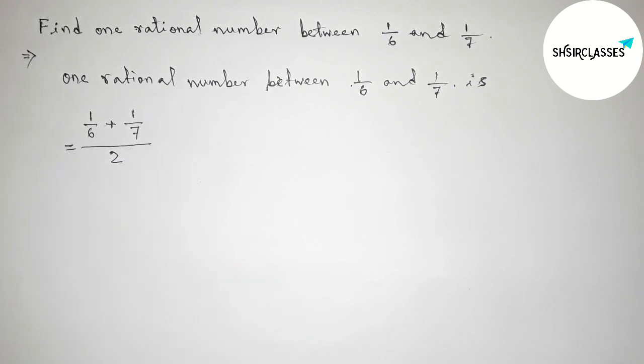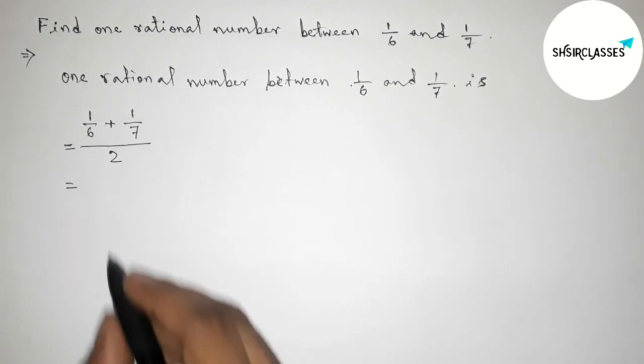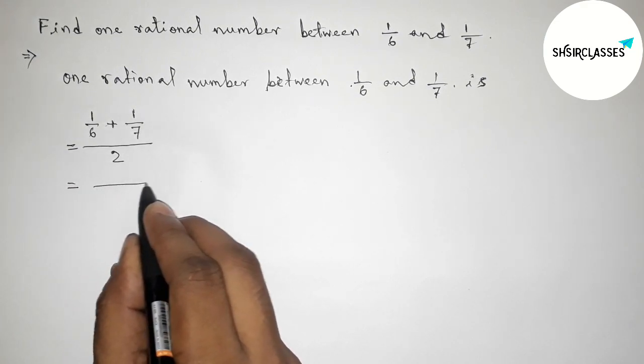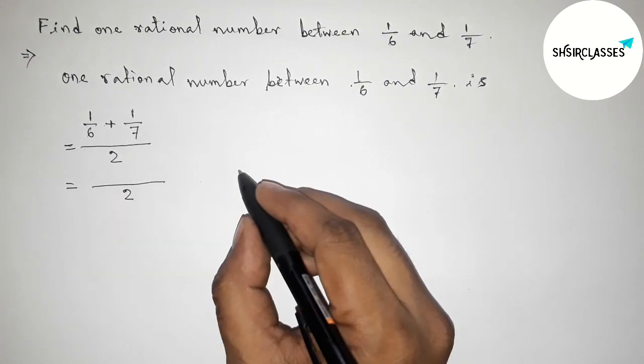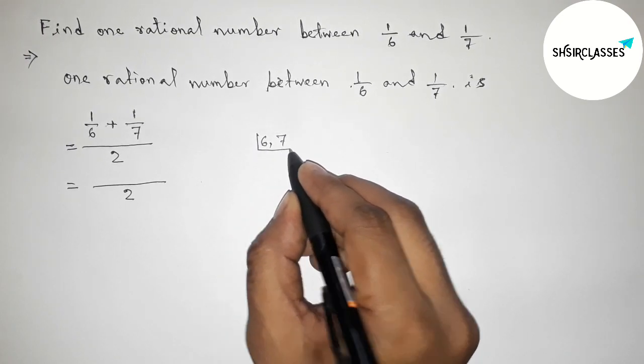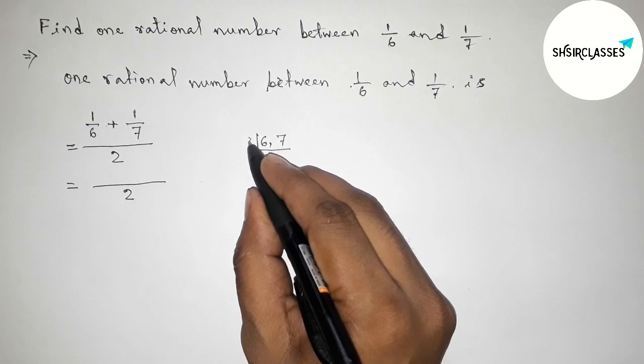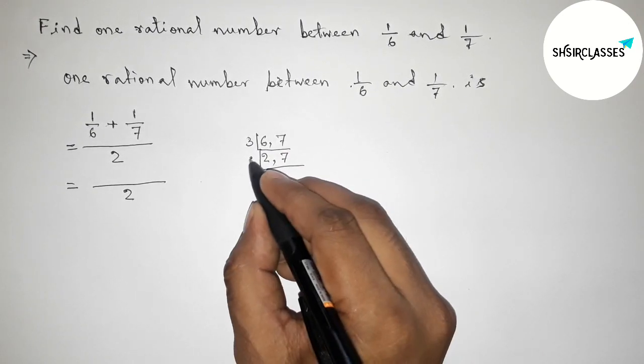So next, simplifying this. First drawing here a line by this way and write down here 2. Now finding LCM, so first factorizing 6 and 7 by this way.